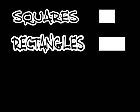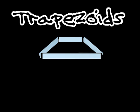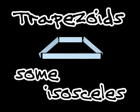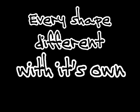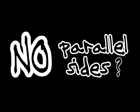Quadrilaterals, there are plenty of types: squares, rectangles, rhombuses, kites, trapezoids, some isosceles — every shape different with its own properties. Find parallel sides, that's the way to start. You can use what you find to tell the shapes apart. Just listen to these lyrics as I rap this song.